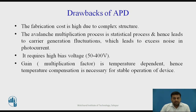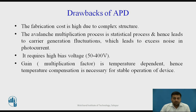The drawbacks of the avalanche photodiode are: fabrication cost is high due to the complex structure; the avalanche multiplication process is statistical and leads to carrier generation fluctuations, causing excess noise in the photocurrent; APDs are operated under high reverse bias voltage of around 50 to 400 volts; and the gain or multiplication factor is temperature-dependent, so temperature compensation is necessary for stable operation.